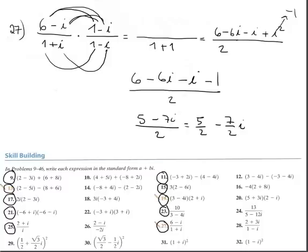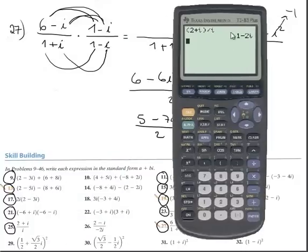Let's verify this answer with the calculator. Remember, parenthesis is extremely important. 6 minus i, and close the parenthesis. Divide by, again another parenthesis, to enclose the second complex number. 1 plus i. Close the parenthesis, enter, fraction.